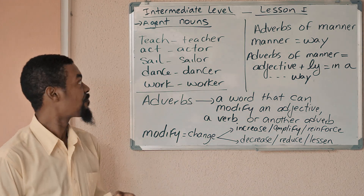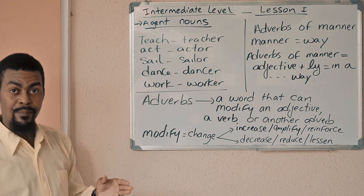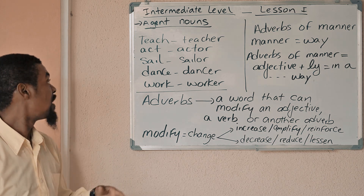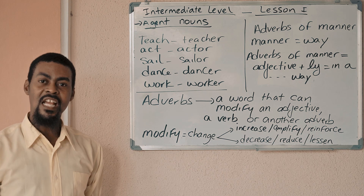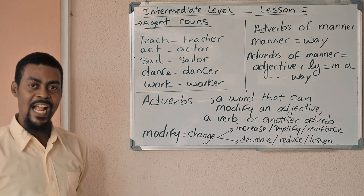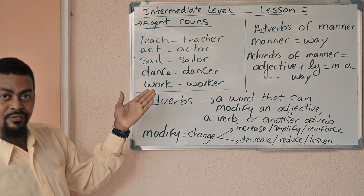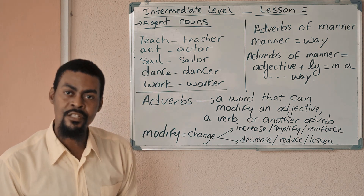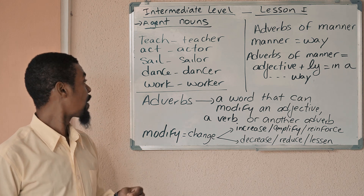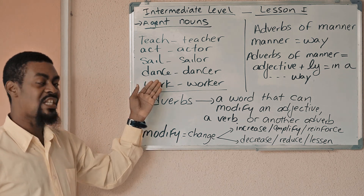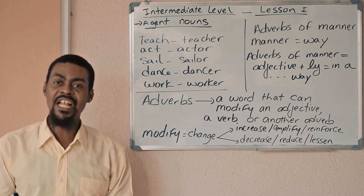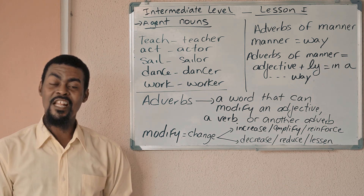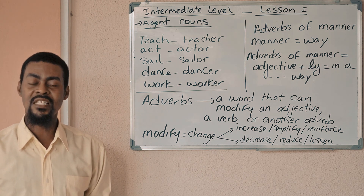Let's look at this. Teach is the verb and the person who teaches is a teacher. Act is a verb and the person who acts is an actor or actress. Sail is a verb — the person who sails is a sailor. Dance is a verb and the person who dances is a dancer. Work is a verb and the person who works is a worker.